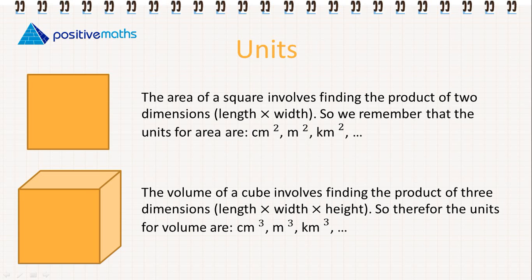So we're thinking squared for area because we're multiplying two things together and cubed for volume because we're usually multiplying three things together.